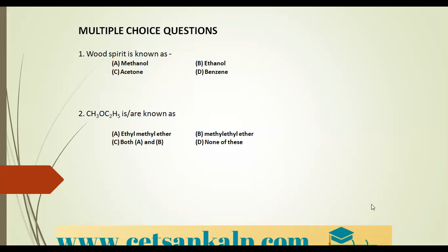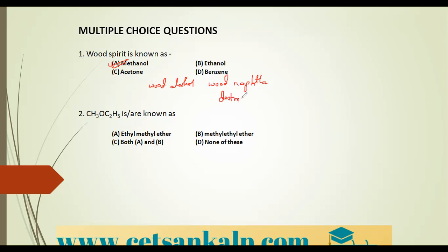The first question: wood spirit is commonly known as which compound? The options are methanol, ethanol, acetone and benzene. The correct option is methanol — it is commonly known as wood spirit, wood alcohol, or wood naphtha. The earliest method for its preparation was by destructive distillation of wood.